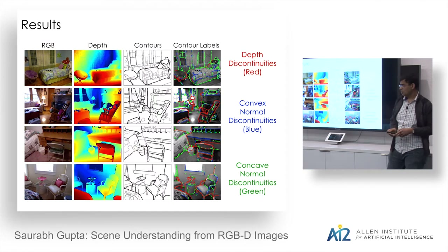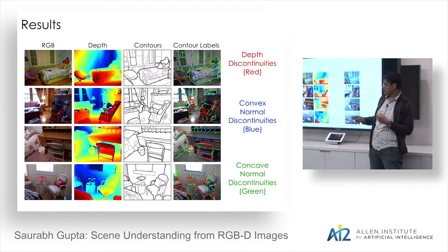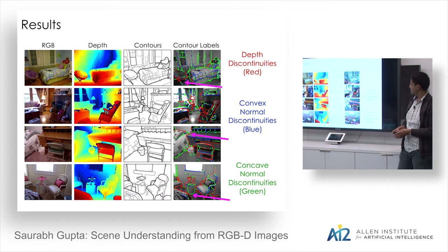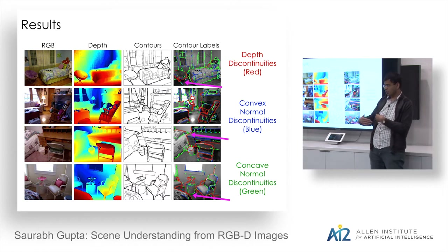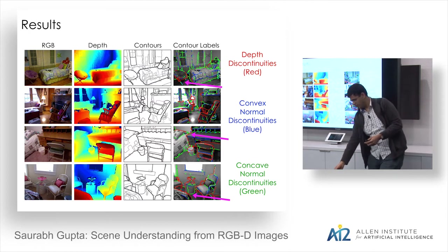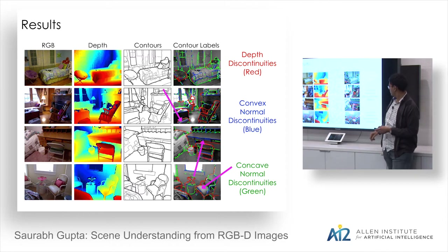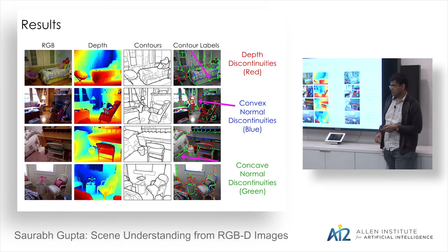Additionally, you can label each discontinuity by type: depth discontinuities correspond to occlusion edges separating objects from floors, while convex and concave normal gradients can be marked separately.